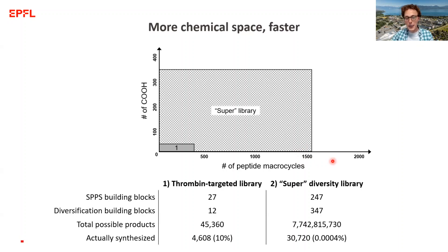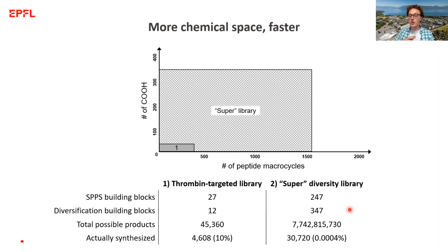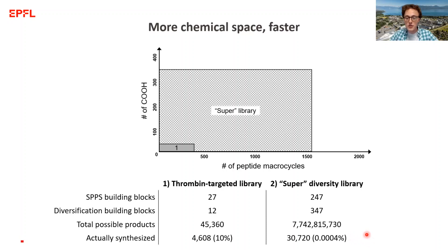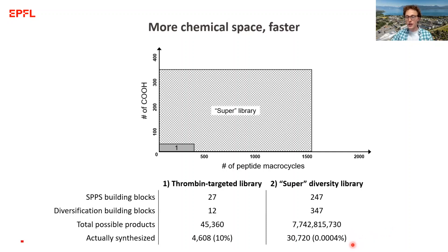An easy way to see how much the synthesizer tool has helped us increase diversity is the total number of possible products. In the thrombin library with tens of building blocks, the total number of possible products is 45,000, and we synthesized 10% of that space. Now, using several hundreds of building blocks, the total number of possible products increases exponentially — we now have almost 8 billion possibilities in the recent plan. We synthesized 30,000, which is only 0.0004% of the total. A low coverage percentage with a large number of compounds indicates a very diverse library.